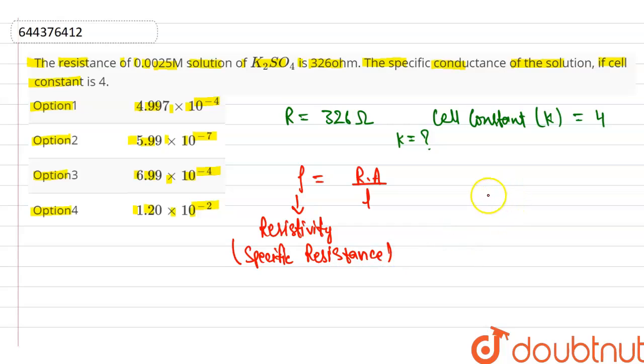And we know the conductivity, it is the reciprocal of resistivity. Then our conductivity is equal to 1 by resistance into length upon area, and L by A is our cell constant. Then our specific conductance is equal to 1 by resistance into cell constant.